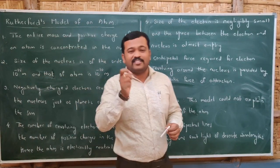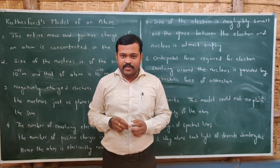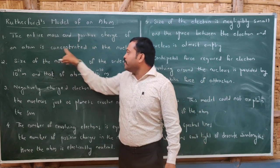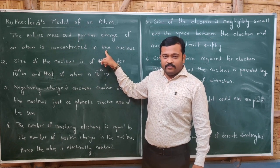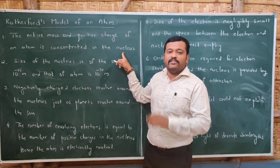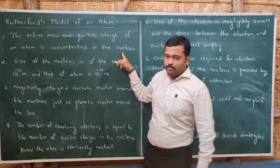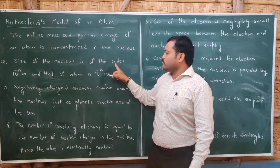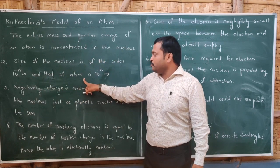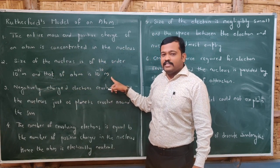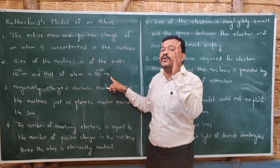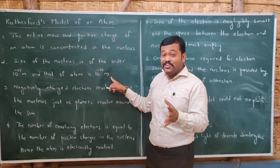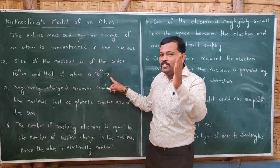Rutherford's model of the atom was the result of the alpha particle scattering experiment. It stated that the entire mass and positive charge of an atom is concentrated at the center, which Rutherford called the nucleus — this is why the credit for the discovery of the nucleus is given to Rutherford. The size of the nucleus is of the order 10⁻¹⁵ m, compared to the atom which is about 10⁻¹⁰ m. If the atom were the size of a cricket stadium, the nucleus would be the size of a cricket ball.